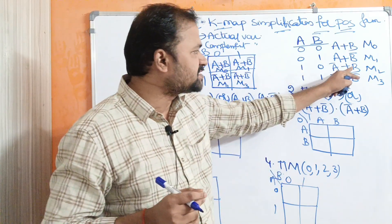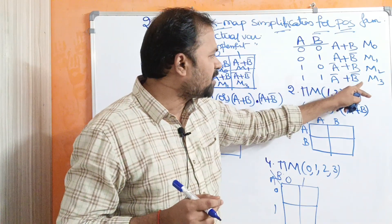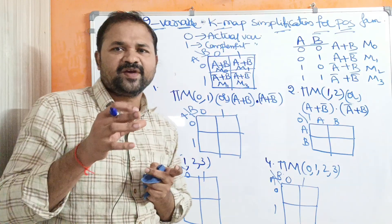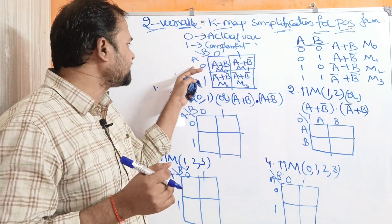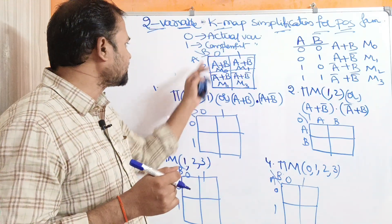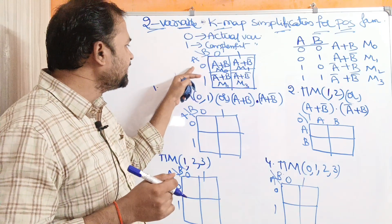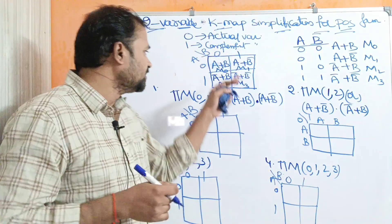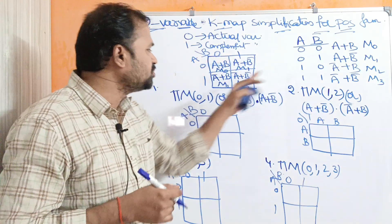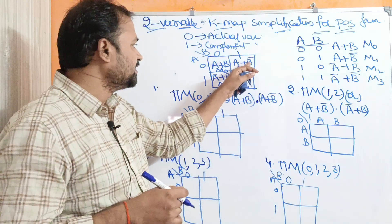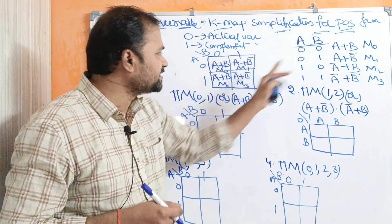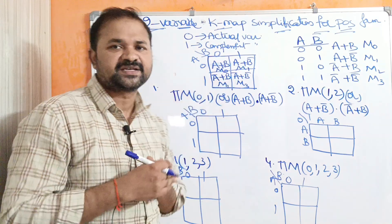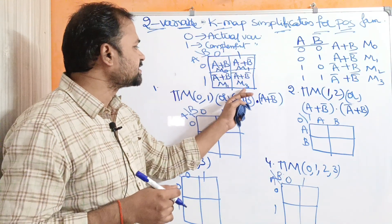Likewise, 10 means A bar plus B, which is M2. And 11 means A bar plus B bar, which is M3. Looking at the two-variable Karnaugh map: left side is A, right side is B, with values 0, 1, 0, 1. A is 0 means A (actual), A is 1 means A bar. B is 0 means B (actual), B is 1 means B bar. So cell 00 represents A plus B (M0), cell 01 represents A plus B bar (M1), cell 10 represents A bar plus B (M2), and cell 11 represents A bar plus B bar (M3).